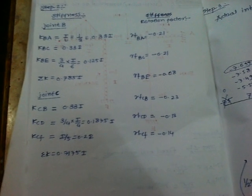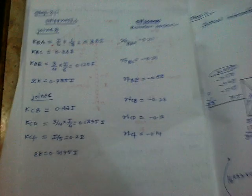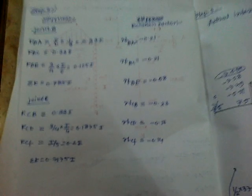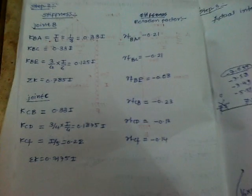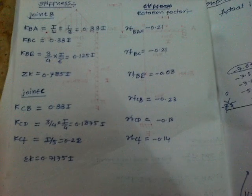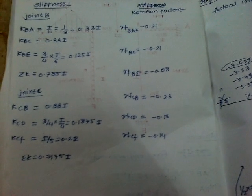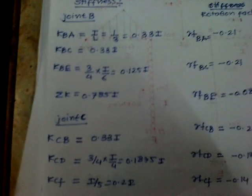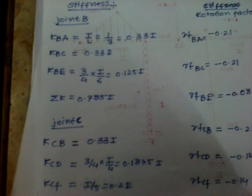Stiffness - we always determine the stiffness at joints. At joint B and joint C, respectively, consider the three portions: BA, BC, and BE; similarly CB, CD, and CF. It is nothing but I/L - moment of inertia upon the length.